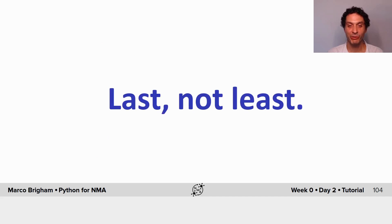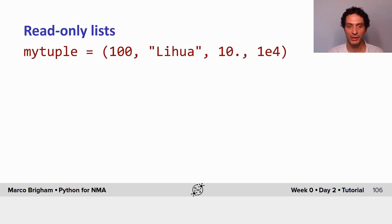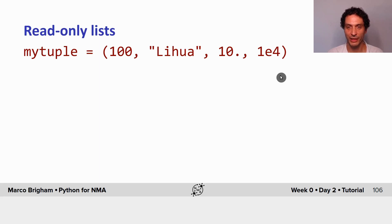Welcome back. We have a few more things to cover. Let's start with tuples. Tuples are a bit like read-only lists. You initialize them just like a list but with round brackets — it's also a container, and you can put any type of object inside, any type of variable.